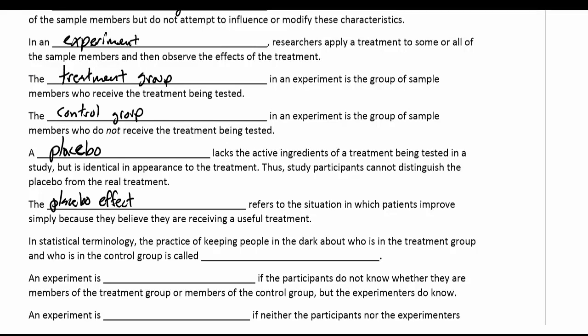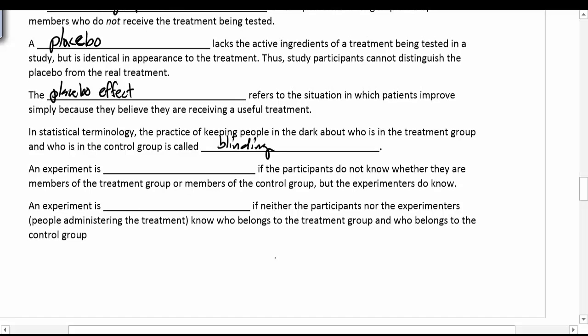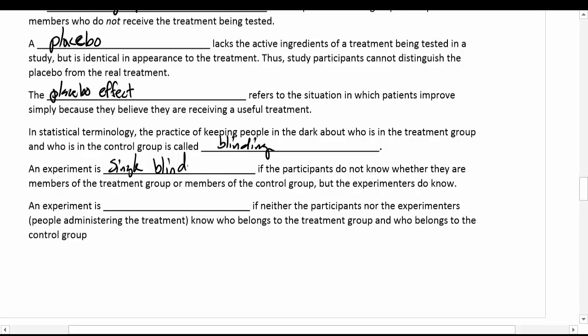The practice of keeping people in the dark about who is in the treatment group and who is in the control group is called blinding. If you don't know whether you're in a treatment or placebo group, you are blinded to the results. A single blind study is when the participants don't know if they're in the treatment or control group, but the experimenters do — the experimenter knows what they're giving the participant, but the participant doesn't.